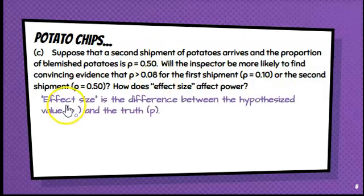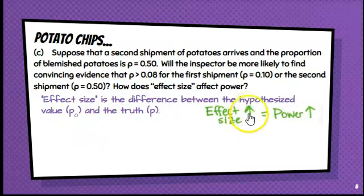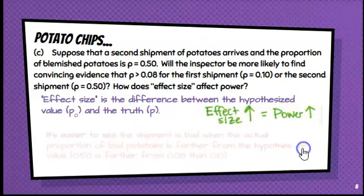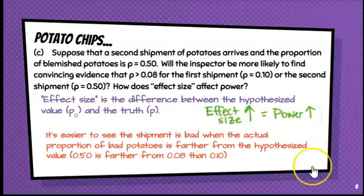Effect size is the difference between the hypothesized value, the null value, and the truth. So as effect size increases, power increases. You're going to note effect size is the difference between the actual and the hypothesized. So if that difference gets bigger, you're more likely to make a correct decision, therefore increasing your power. It's easier to see the shipment is bad when the actual proportion of bad potatoes is farther from the hypothesized values. 50% is farther from 8% than 10% is. That's what effect size is talking about. Actual versus hypothesized.